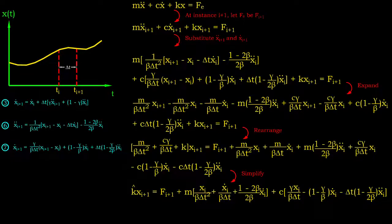After that, we rearrange the equation so that any term associated with x i plus 1 is moved to the left hand side of the equation. Since we are in the process of defining the solution for x i plus 1, all other terms should be moved to the right hand side. Finally, let's simplify the equation.